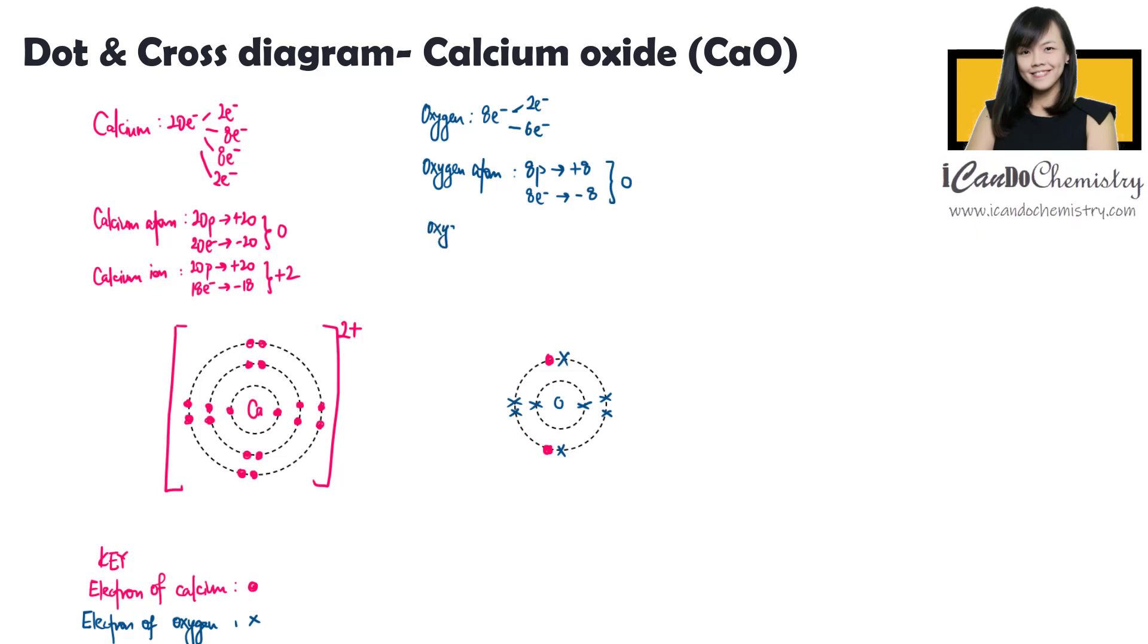When oxygen takes in electrons from calcium, the number of protons remain unchanged. Hence, the positive charge is still positive 8. However, there are 10 electrons now.